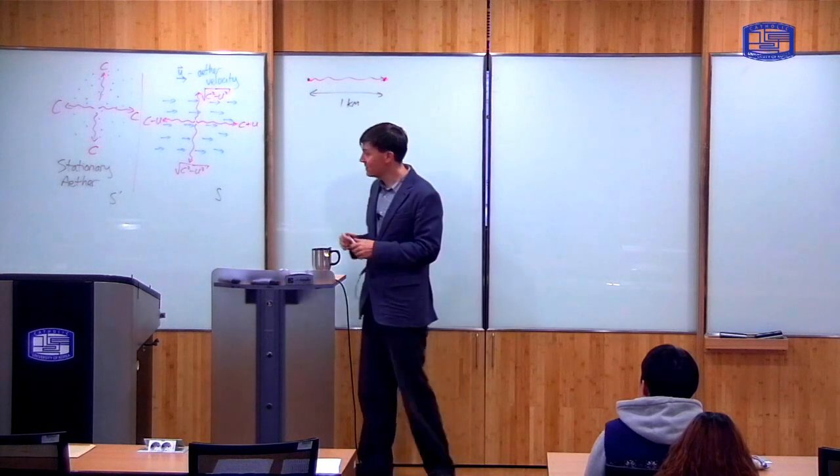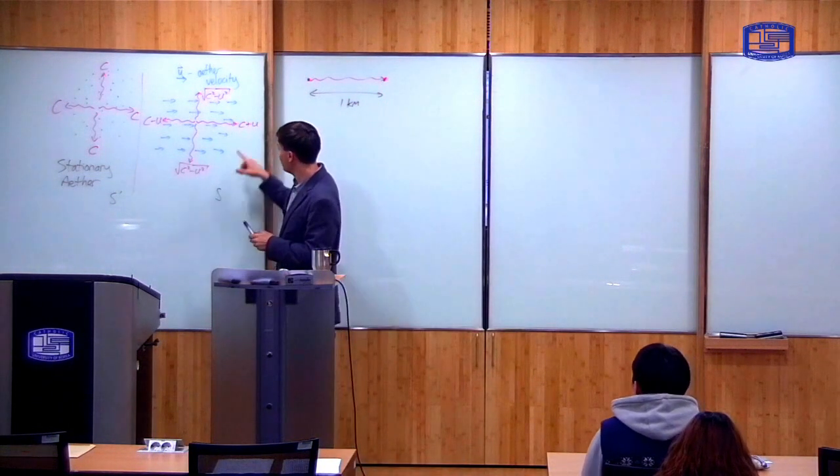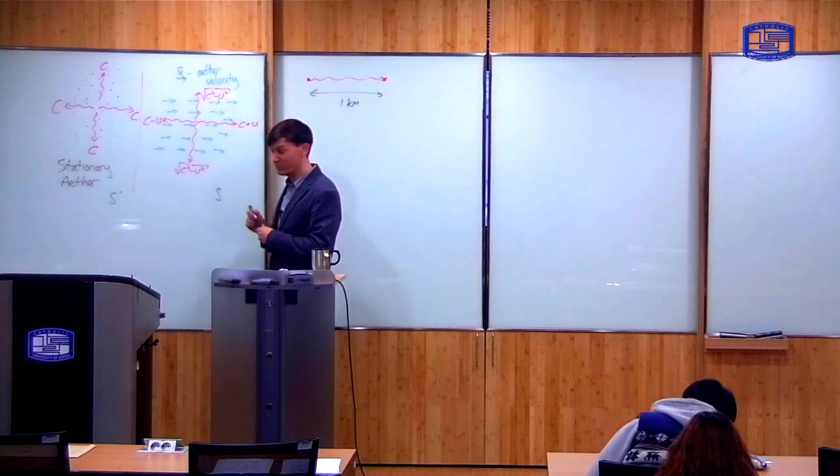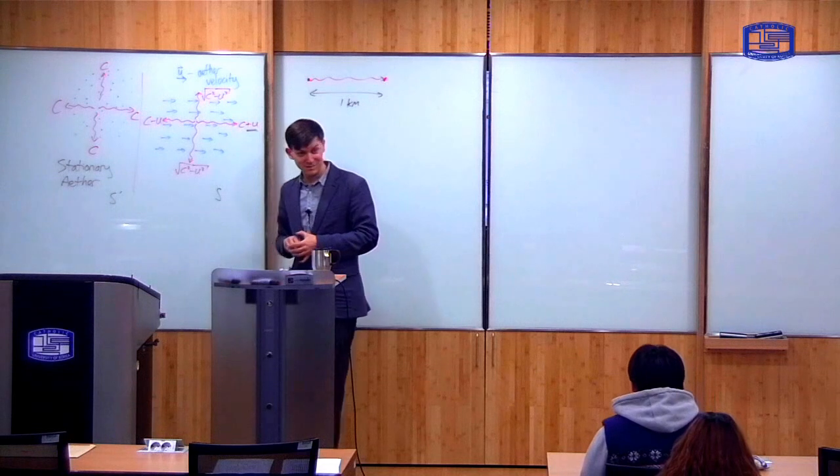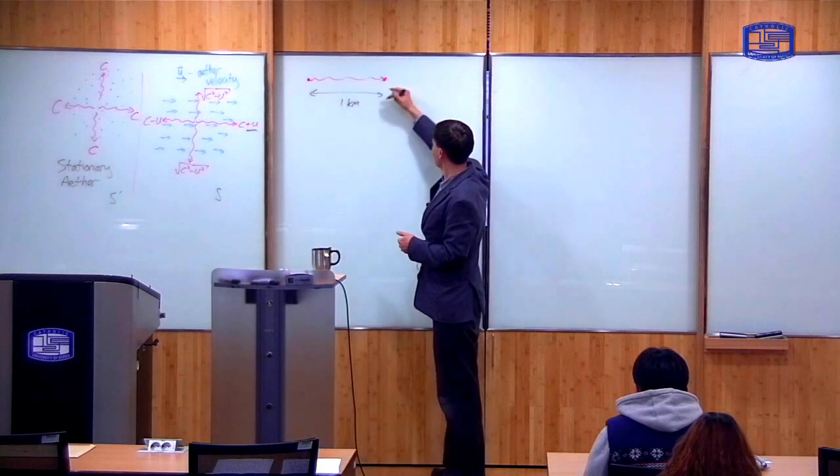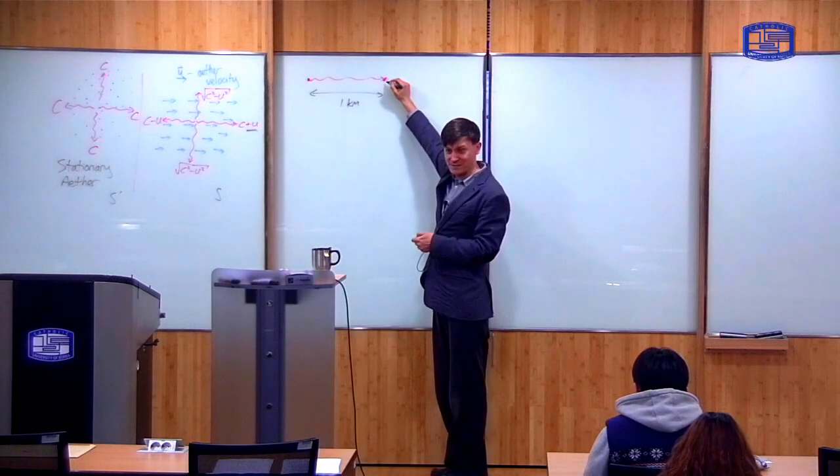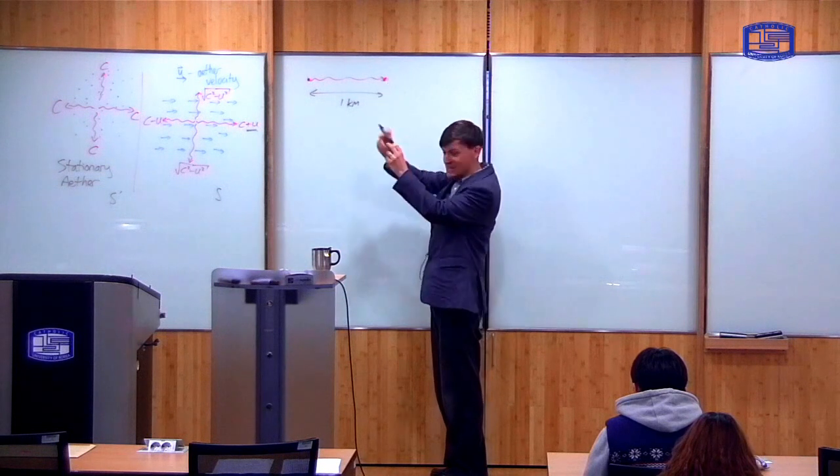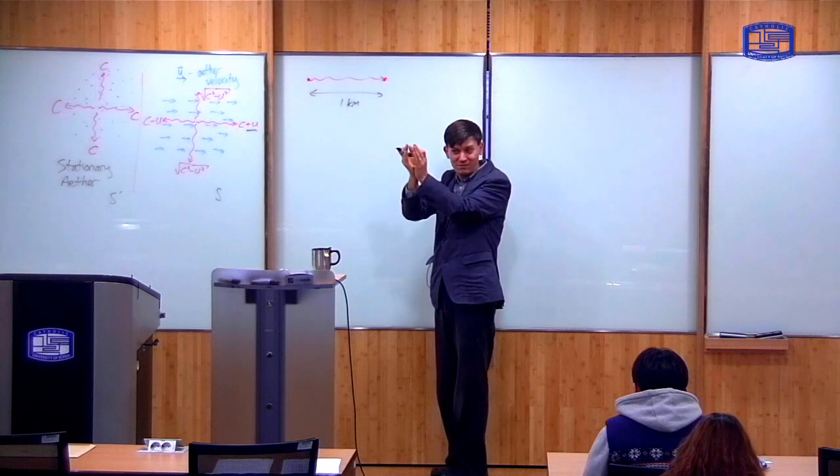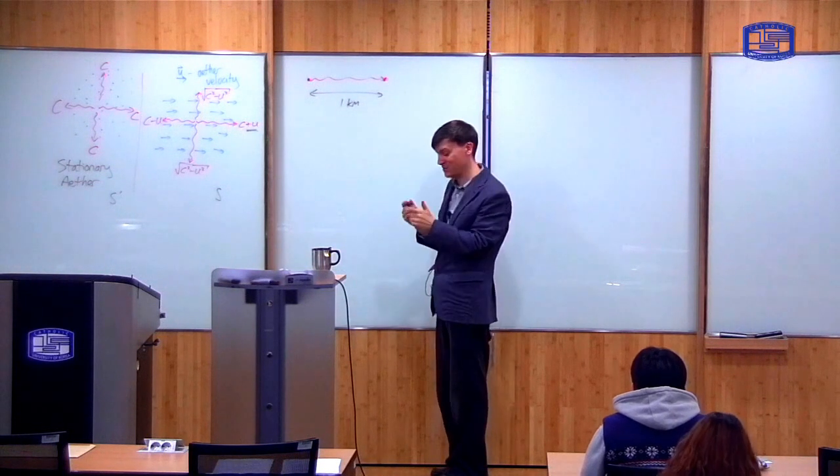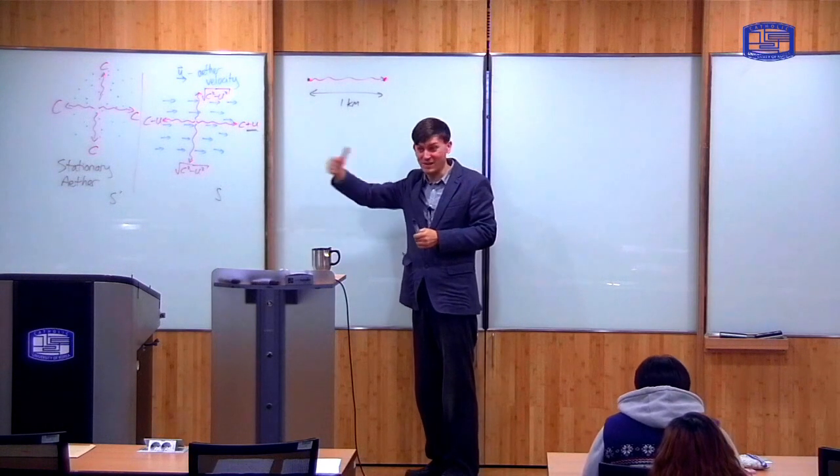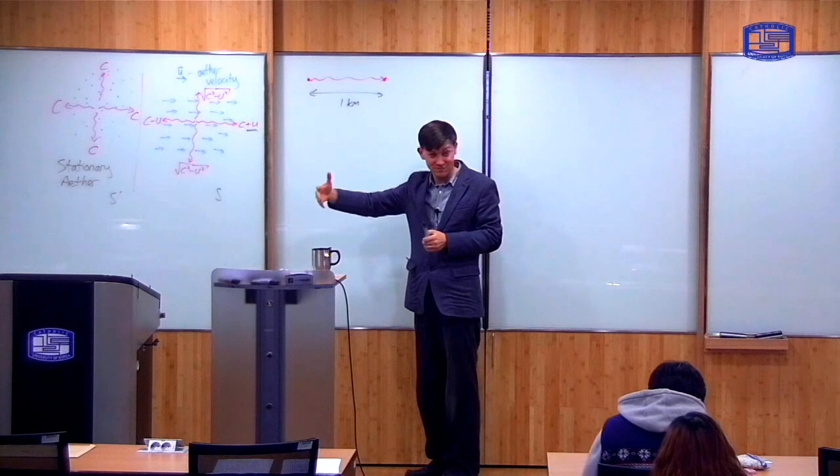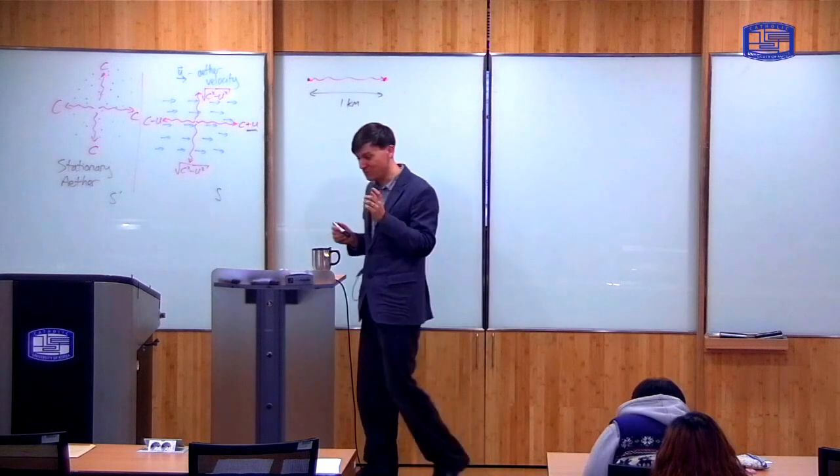Secondly, the thing you're trying to measure is not the speed of light itself, but the change in the speed of light. So if the speed of light takes a few millionths of a second to go here, then the change in the speed of light will be even smaller. The change in the time measurement will be billionths of a second, or even smaller, depending on your velocity through the ether. So that's a very short difference of time to measure.